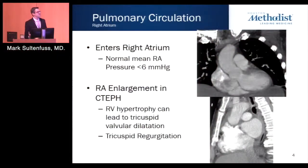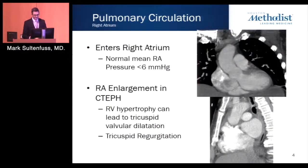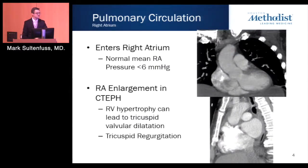Blood then enters the right atrium, which is a low pressure system. Within the atrium, blood passes through the tricuspid valve into the right ventricle. Normally, unless it's a long-standing chronic pulmonary arterial hypertension situation such as CTEPH, the right atrium is not going to be enlarged. But it can occur in the setting of right ventricular hypertrophy secondary to tricuspid regurgitation.